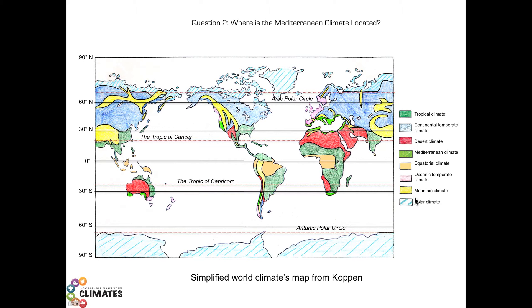What is interesting is that some of these climates are related with latitude. This is the case of the polar climate, which is located between 60 degrees and 90 degrees latitude.